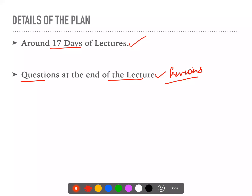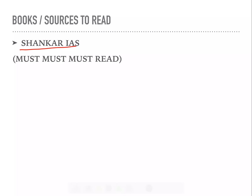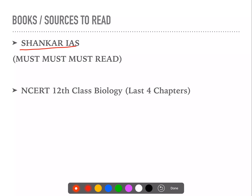I would also suggest that for previous years' questions, you make a compendium. After each lecture, you should actually revisit them so you will know whether you are able to solve those questions. Then we will have tests — weekly as well as in test series. Lastly, we will talk about books and sources: Shankar IAS Environment is the most must-read — that is the most important thing. Next, NCERT Plus 2 of biology — the last four chapters of environment.